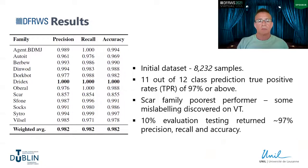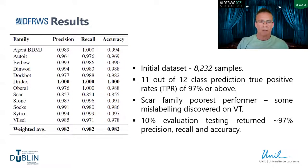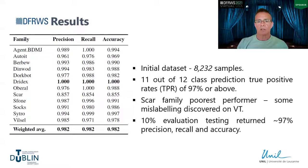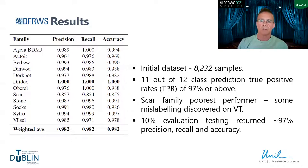The results on the initial training set were good — 11 out of 12 families were predicted with a TPR rate of 97% or above. One family, the SCAR family, performed markedly poorer. Further investigation showed that the two classes it was misclassified as — Autowit and Viltel — were found via the VirusTotal API to involve mislabeling in many cases, where SCAR samples were mislabelled as Autowit. The 10% evaluation set returned around 97% across all three classification metrics.